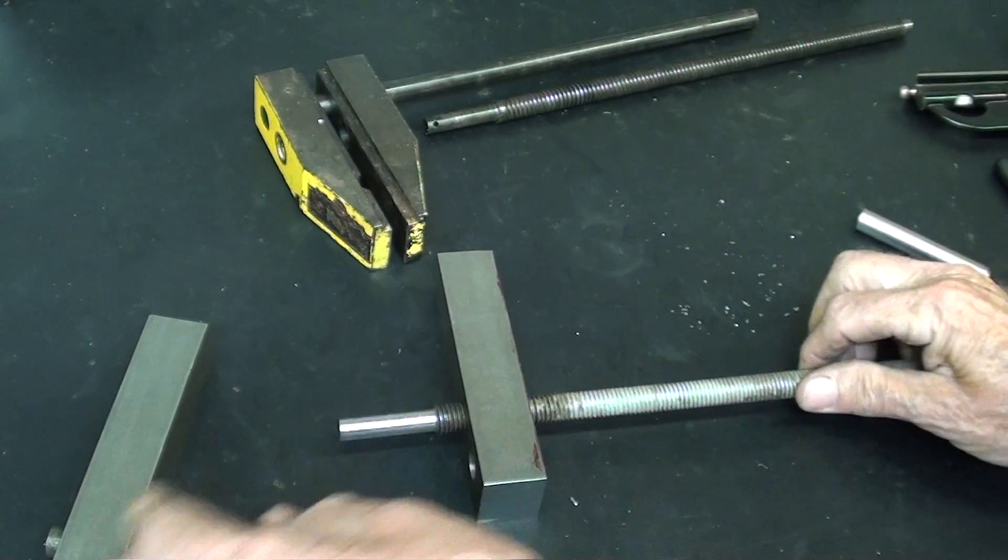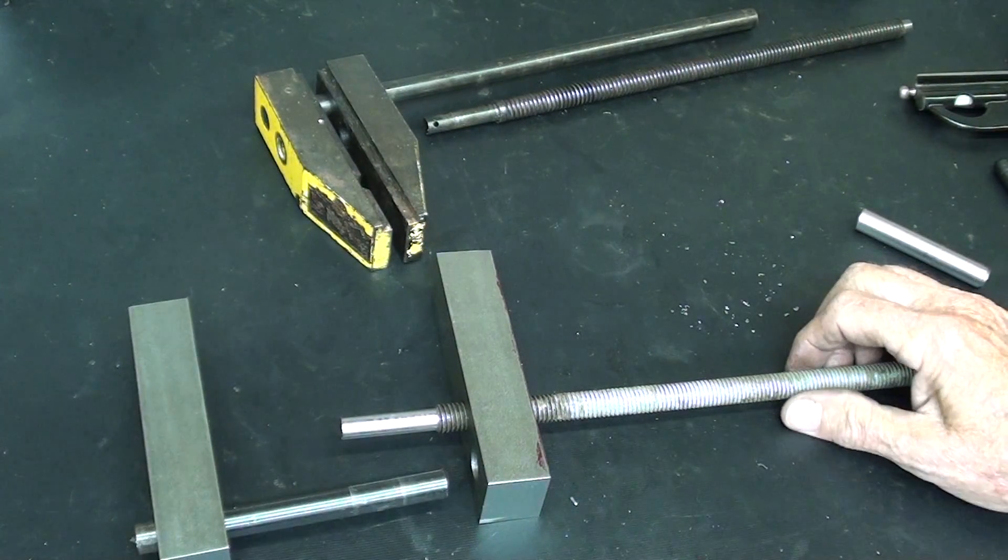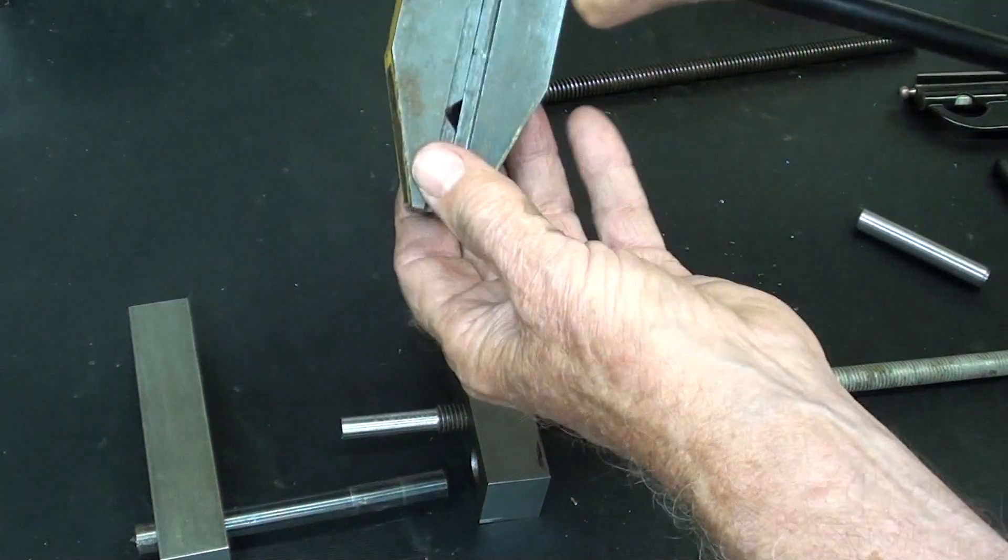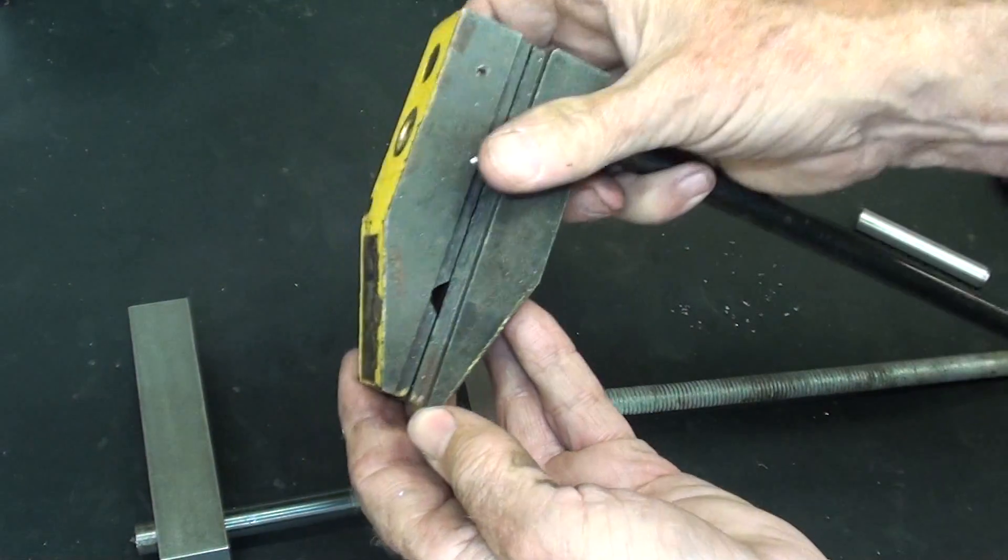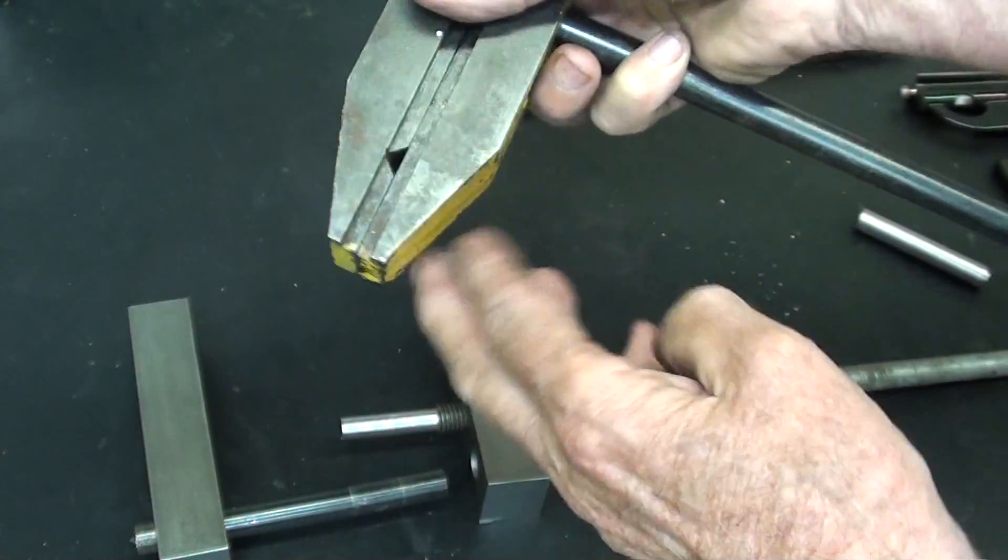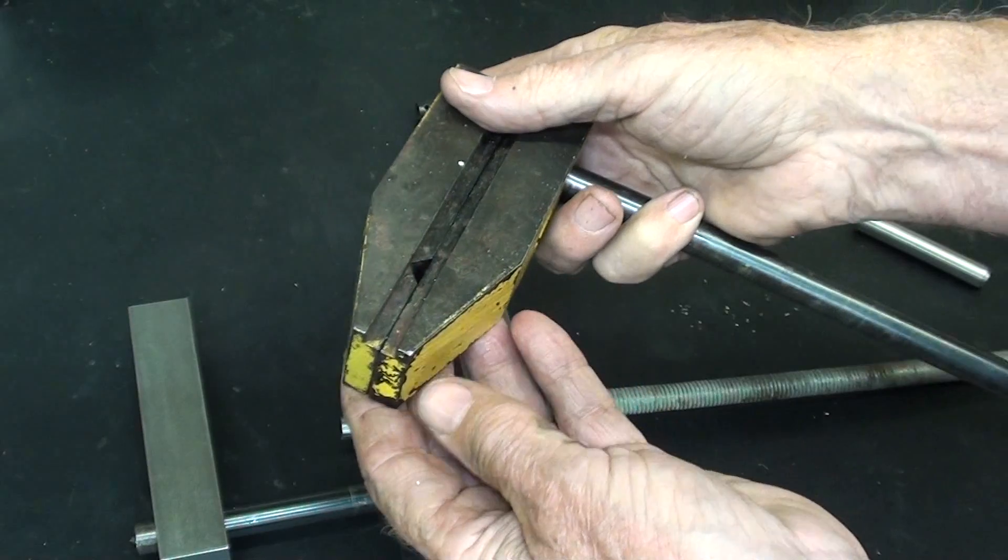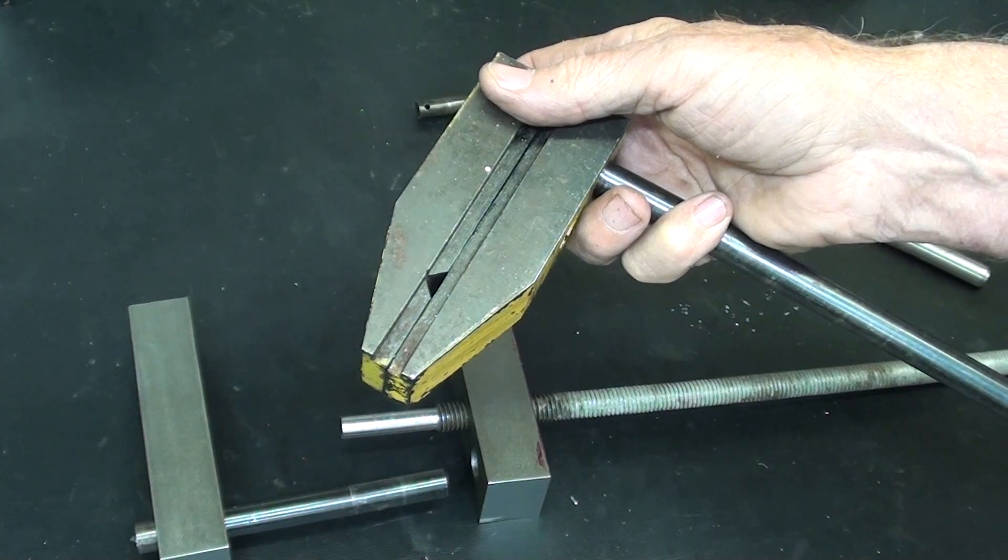And that concludes this part of the video, part two. In the next part, I think that we'll go to the shaper or the milling machine, I haven't decided yet, and make these angles, machine these angles. Thanks for watching. This is Tubal Kane, Mr. Pete 222.